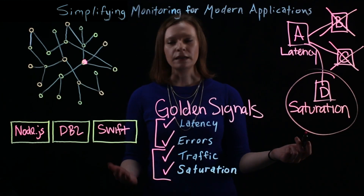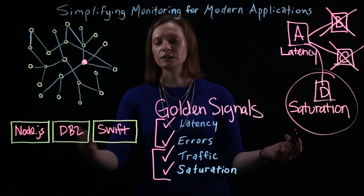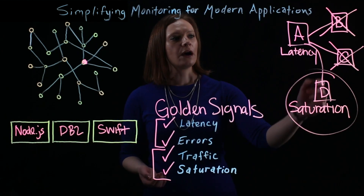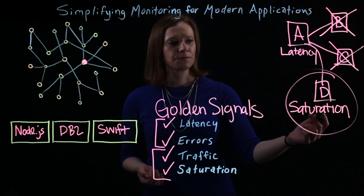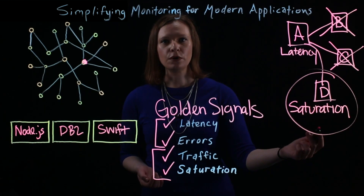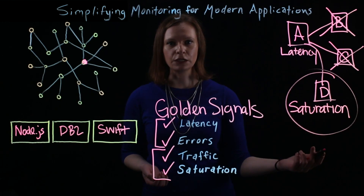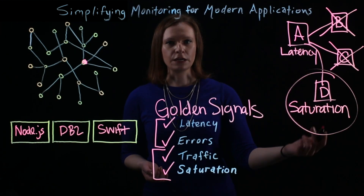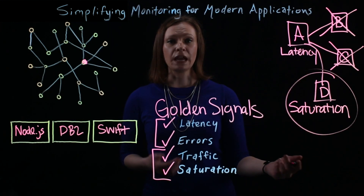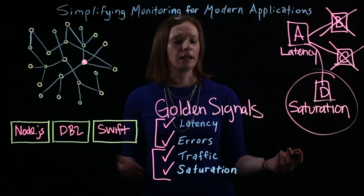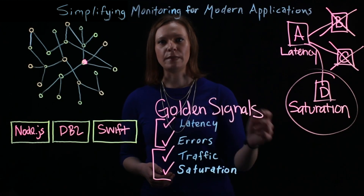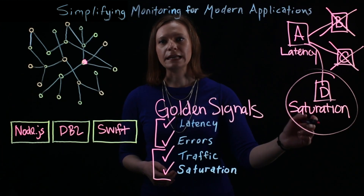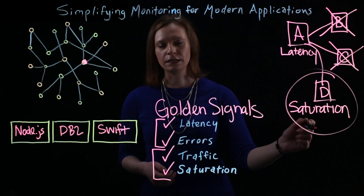Right there, after only a few minutes, we've identified service D as likely our root cause. Instead of having to pull in experts for each of the different services, we can go directly to service D and let them know they're likely the cause of the issue. And what's even better is that if they're using golden signals to monitor their service, it's very likely they've already identified this and are already working on a fix.